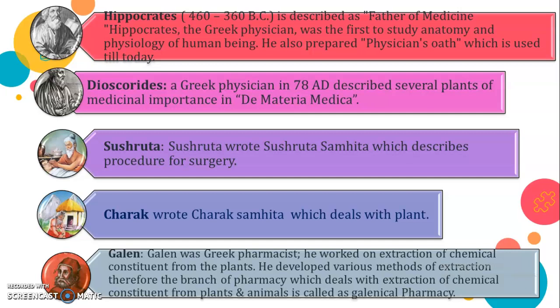Galen was a Greek pharmacist in 131–200 AD. He described various methods of preparation containing active constituents of crude drugs. Even today, the branch that deals with the extraction of constituents from plants and animals is called Galenical Pharmacy. Galen worked on the extraction of chemical constituents from plants and developed various methods of extraction. Therefore, the branch of pharmacy dealing with extraction of chemical constituents from plants and animals is named Galenical Pharmacy in his honor.